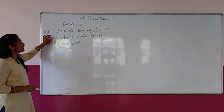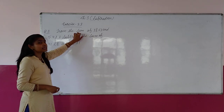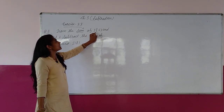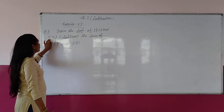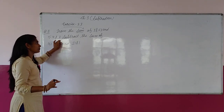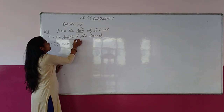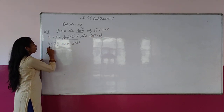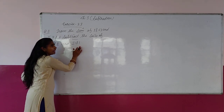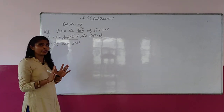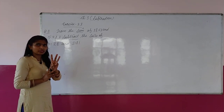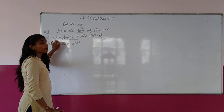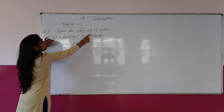The statement of question number 3rd is: from the sum of 3,863 and 5,427, subtract the sum of 4,128 and 2,181. This question is a different question. We will do 3 works here.